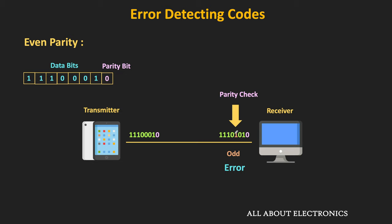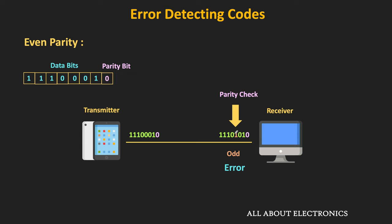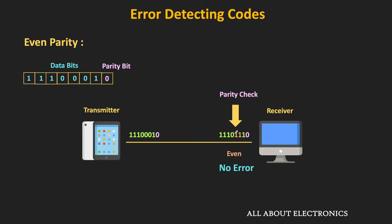But we cannot find the exact location of the error. Moreover, if there is more than one error — or to be precise, if there is an even number of errors in the code — then with the help of this parity bit, we cannot detect the error. For example, if there are two errors in the received code, the parity checker circuit will check the parity. In this case, the total number of 1s in the code is equal to 6. Since it is even for this even parity, the parity checker circuit will not generate any error, and it will consider this received code as valid — but actually it is invalid.